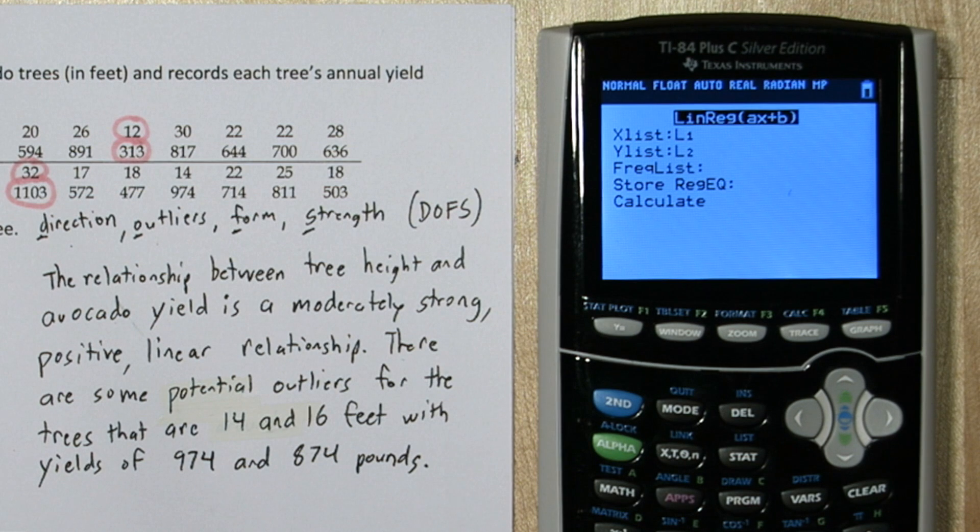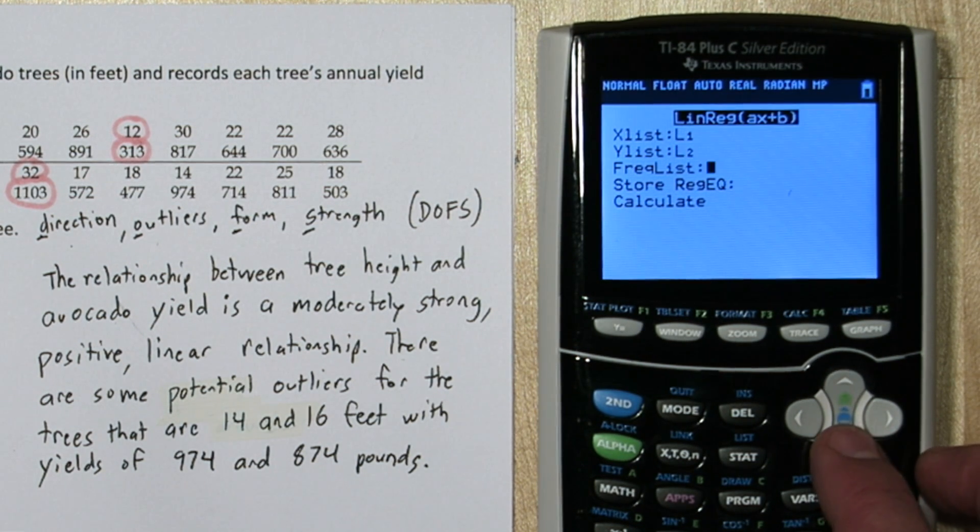So it says, what's your x list? We're going to keep list 1. What's our y list? We're going to keep list 2. And for frequency list, just leave that blank.